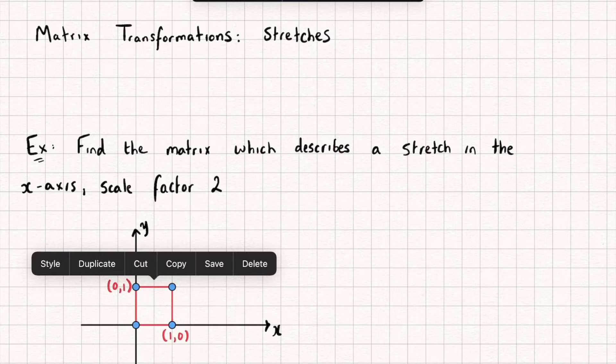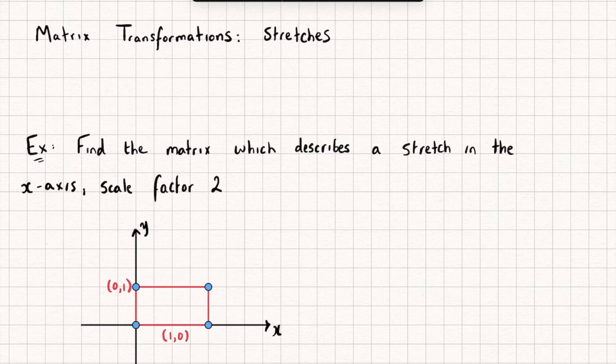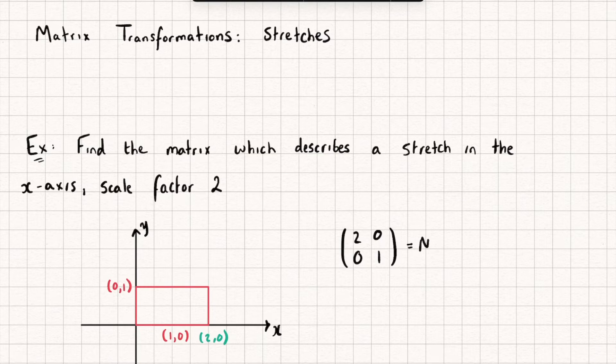So if it's stretched with a scale factor of 2, then my point 1, 0, well that's going to be stretched across and it's going to become the point 2, 0, isn't it? And so just from this I could find out the matrix is going to look something like this. My point 1, 0 is transformed to the point 2, 0. And while we said the y axis is going to be unchanged, so the point 0, 1 is going to stay at 0, 1. And so this matrix here would describe a stretch in the x axis with a scale factor of 2.